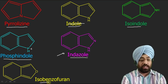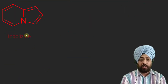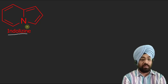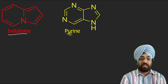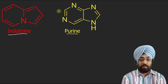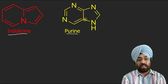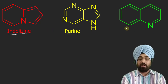All these are fused heterocycles in which two rings are fused with one another. Now this is purine — a five-membered heterocycle fused with a six-membered heterocycle, containing four heteroatoms in the compound. Purines and pyrimidines are the bases present in DNA, so heterocycles are quite important. Our DNA is made up of these types of compounds. So this compound is called purine.